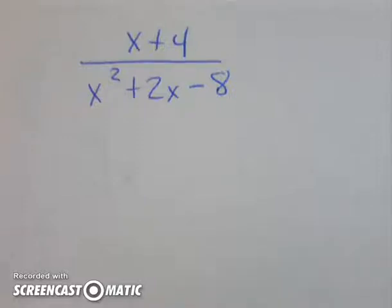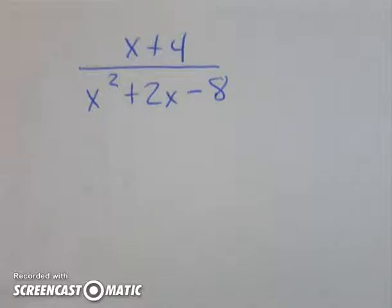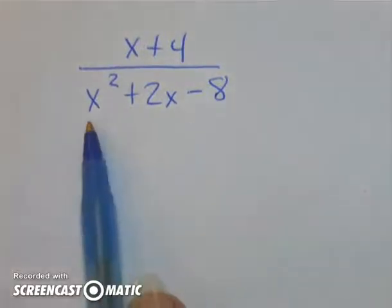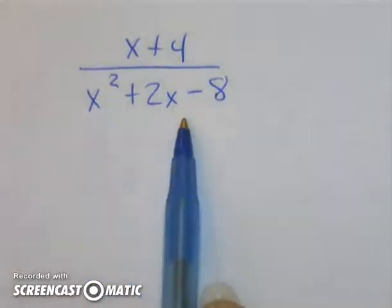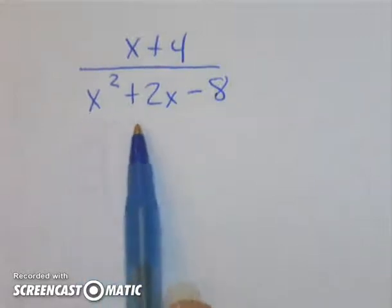Now we're going to review simplifying rational expressions. I need to simplify this. To simplify this, I need to find the factors that will give me my denominator. So I must factor this.